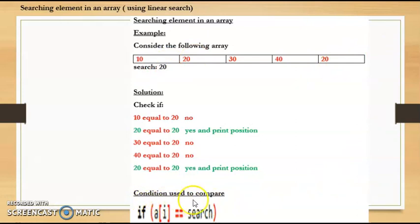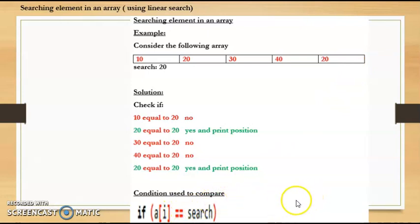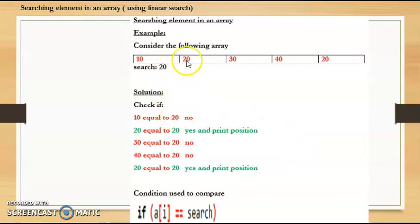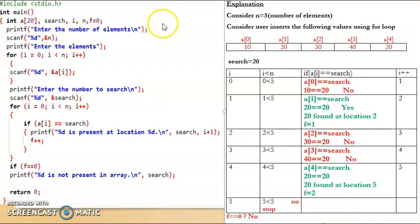The condition we will use for comparing in the code is: if a[i] == search. Here a[i] holds the array values — for example, 10, 20, 30, 40, and 20. We use double equal to because in C, double equal to is used to check an equality condition. Single equal to is just for assignment. The variable search holds the element to be searched — for example, 20. Based on this logic we will write a program to search an element in the array.